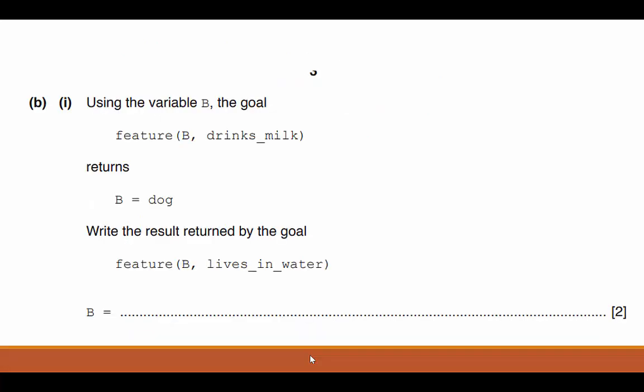So it says, using the variable capital B, the goal, feature B drinks milk. So this reads B has a feature drinks milk. When you put this in your declarative programming language, it looks to see for the animal that has the feature drinks milk. Well, a dog has that feature. If there are multiple ones, it will return multiple animals that do that. So it says, write the result returned by the goal. B has the feature that it lives in water.